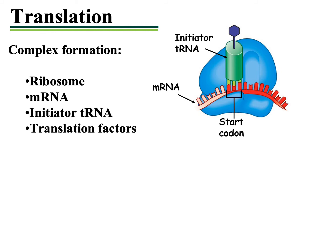Let's look at how the process of translation begins. What needs to occur is the ribosome, the messenger RNA, and the initial tRNA all come together to form what's known as an initiation complex. At the end of protein synthesis, the two subunits of the ribosome dissociate from one another. So in order to initiate protein synthesis, the two subunits must be brought back together again for the functional ribosome to exist. Translation factors help this association along.